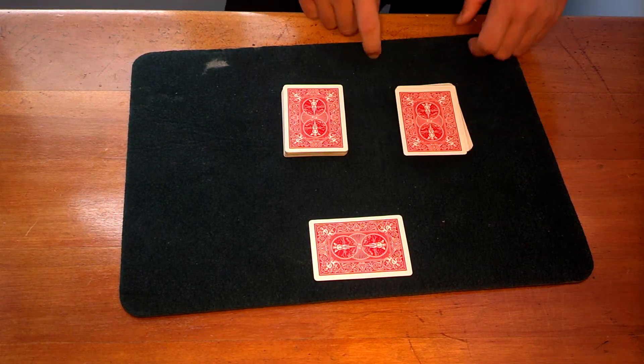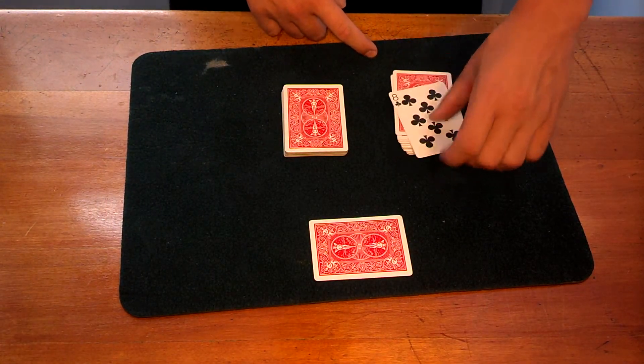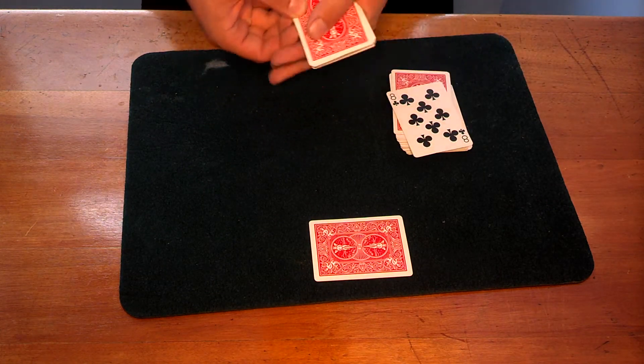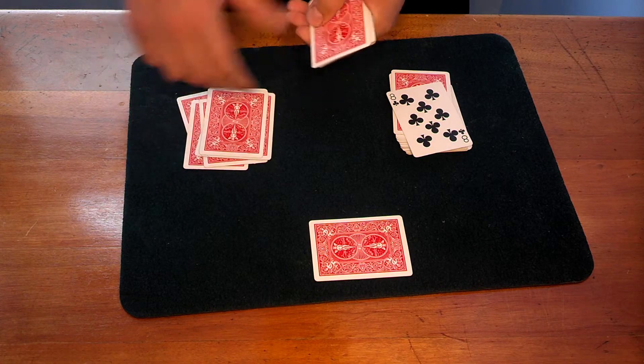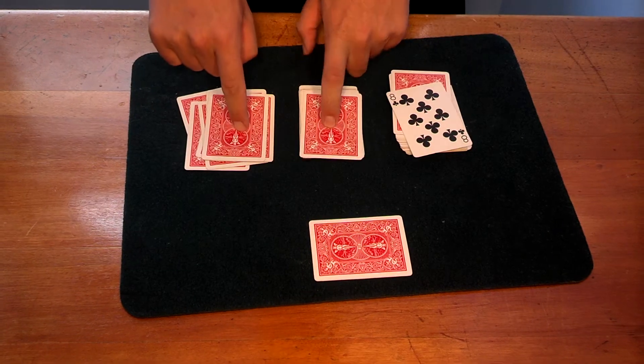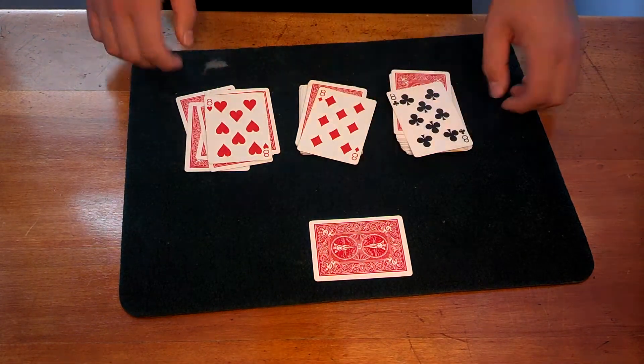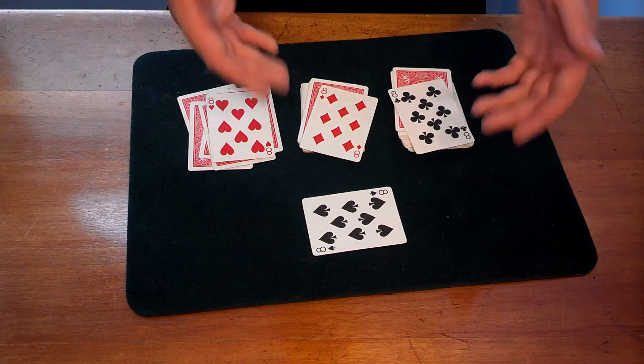So this was the top of the deck the whole time where the other eight was. So that's the eight. So since that is an eight, we count one, two, three, four, five, six, seven, eight. And since it was the eighth and the ninth spot, there's the other two eights and our prediction card is of course the eight.